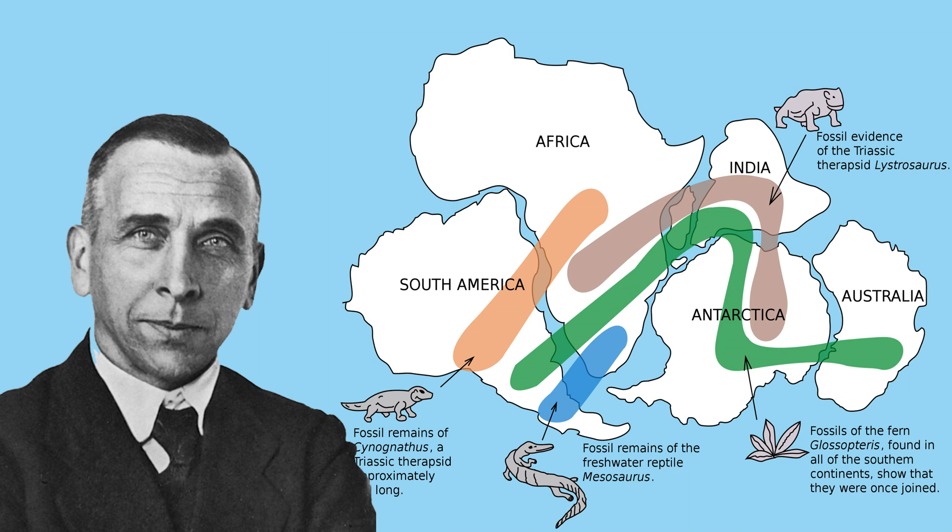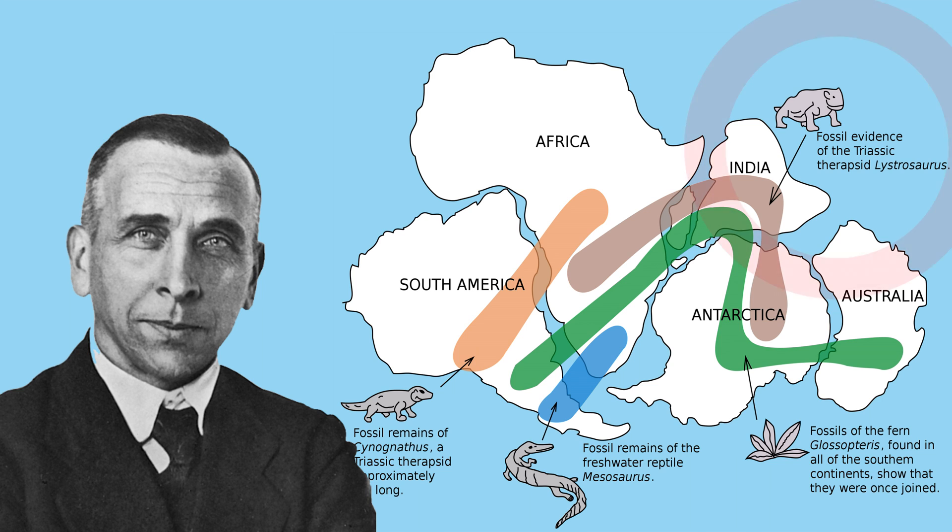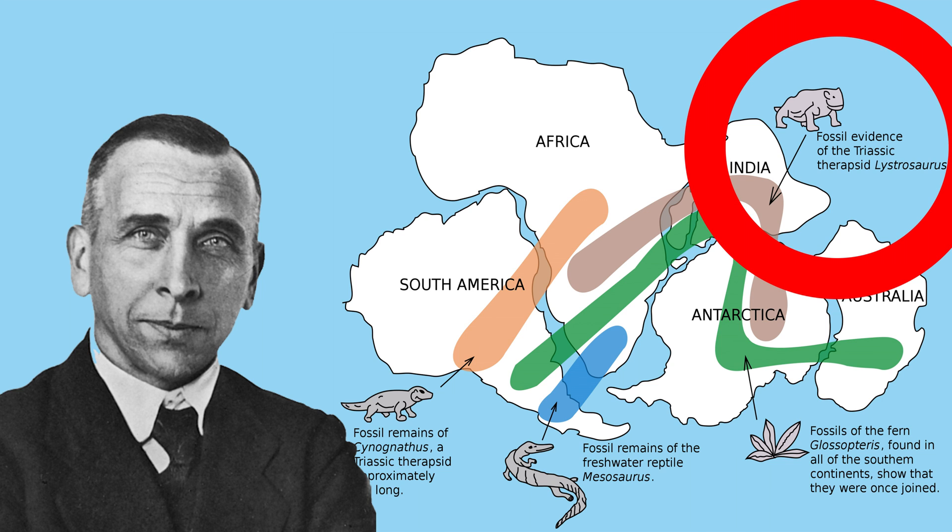He kept reading and learned that fossils of Cynognathus, large terrestrial animals that had lived about 240 million years ago, had been discovered in both South America and Africa. And that Lystrosaurus, another large terrestrial animal that had lived about 250 million years ago, had been discovered in Africa, Madagascar, India, and Antarctica, exactly like Glossopteris.